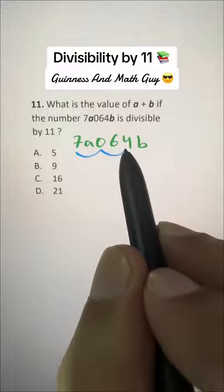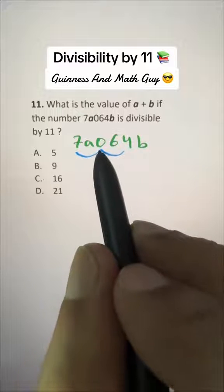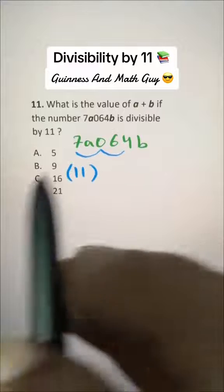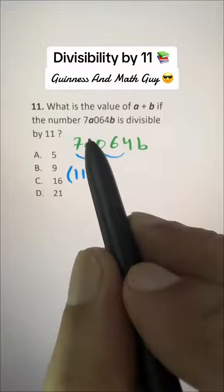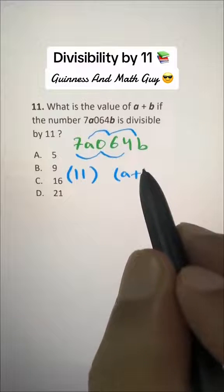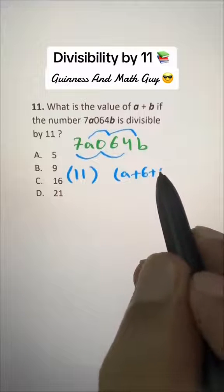Positions 1, 3, 5: 7 plus 0 plus 4 is 11. And then you add the even positions: A plus 6 plus B.